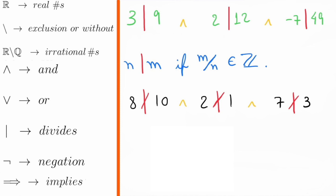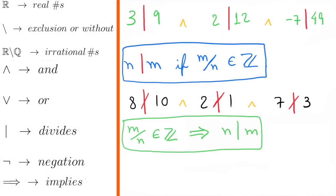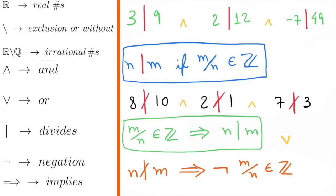Next, we see that this is the symbol of negation, and this is the symbol of implies. Hence, the fact that M divided by N is an integer implies that N divides M. Similarly, if N does not divide M, then it implies the negation of the fact that M divided by N is an integer. In other words, it implies that it is false that M divided by N is an integer.